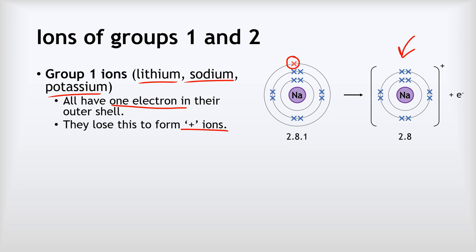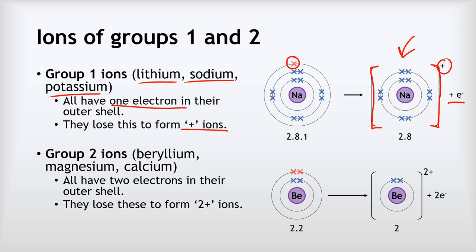The way we represent ions like this — if we draw a diagram, we draw square brackets around it and put the plus charge outside. Don't forget the electron that's been lost is drawn next to it. Group 2 is beryllium, magnesium and calcium. These all have two electrons in their outer shell, and similar to group 1, they will lose them. But because they're losing two electrons, rather than being just plus, they will be two plus ions. We can see that with beryllium — it's got those two electrons in its outer shell, it loses them both to leave the beryllium ion with a complete shell of just two electrons and a two plus charge.